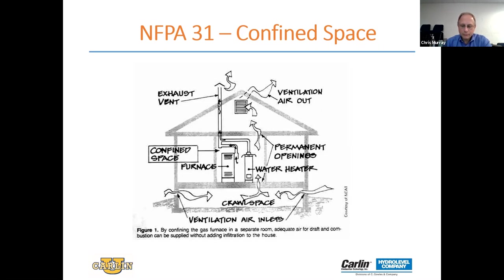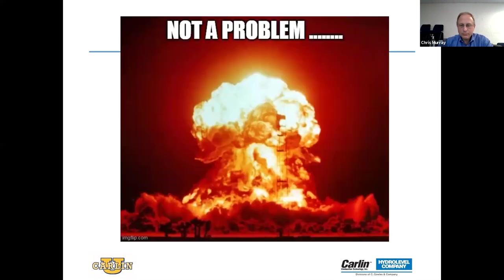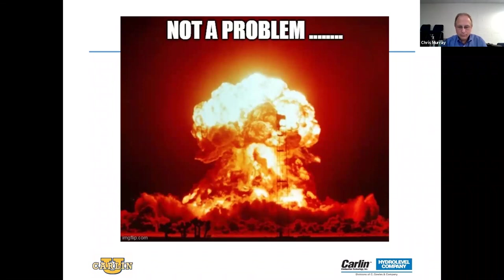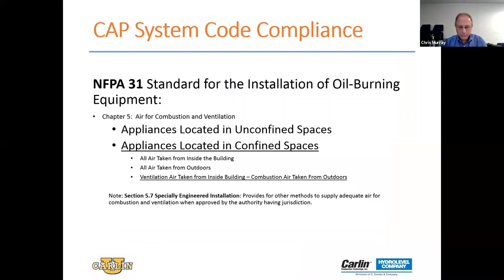Sometimes it works, and sometimes it's not a problem. But when it's not a problem, that's when you have to be concerned, because it can and most likely will become a problem. Not being certain of where your combustion air is being introduced in the house certainly is not code. Code requires that you understand and introduce proper combustion air into the home for the appliance, and most of that is defined under NFPA 31.